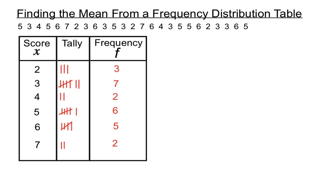So here's a bunch of numbers and we can put them into a frequency distribution table where we have the scores and we can tally up how many of those scores we have, how many times each of those scores occur, what are the frequencies of each of those scores.